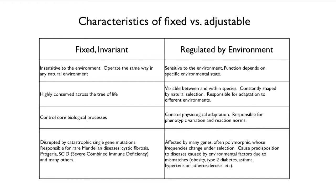Adjustable reactions are often regulated not by one but by many genes. Those genes are often polymorphic and the alleles are often changing in frequency under selection. They cause predispositions to diseases that are triggered by environmental factors, and those predispositions are elicited when there is an environmental mismatch — giving us obesity, type 2 diabetes, asthma, hypertension, atherosclerosis, and things like that.